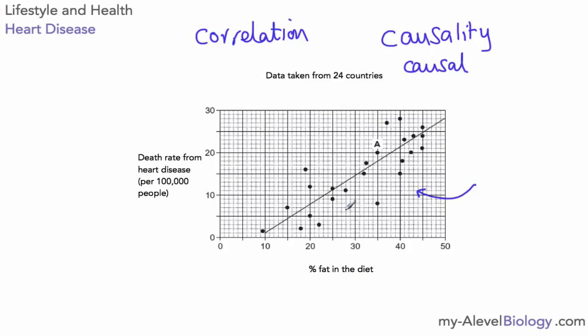So, for this first AS level topic we've looked at pathogens and lifestyles. The key thing about lifestyles is that you have to be able to look at data and make conclusions based on that data — that's the kind of question you'll get in the exam for this topic. Anyway, that's me done for now, thank you for watching and see you soon.